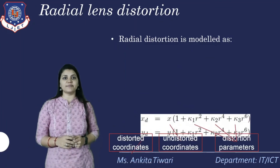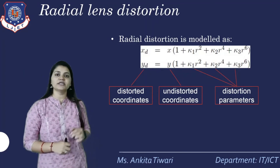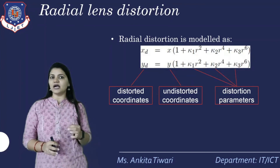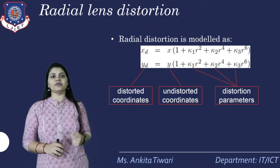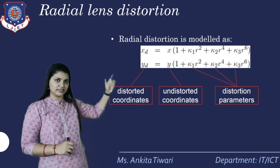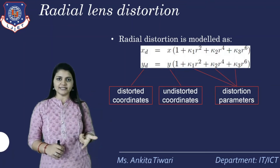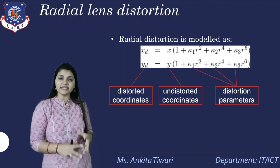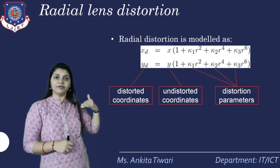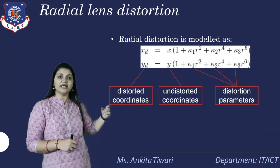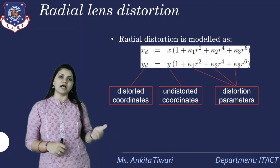Radial distortion is modeled as: xd = x·(1 + k1·r² + k2·r⁴ + k3·r⁶) and yd = y·(1 + k1·r² + k2·r⁴ + k3·r⁶), where xd and yd are the distorted coordinates, x and y are the undistorted coordinates, k1, k2, k3 are the distortion parameters, and r² = x² + y² represents the radial distance from the image center.